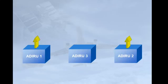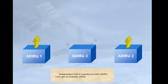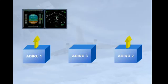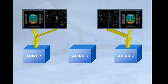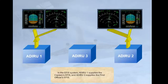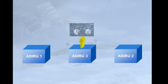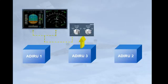Independent data is supplied by each ADRU. In the EFIS system, ADRU1 supplies the captain's EFIS and ADRU2 supplies the first officer's EFIS. ADRU3 is available as a backup to either EFIS system via the switching panel.